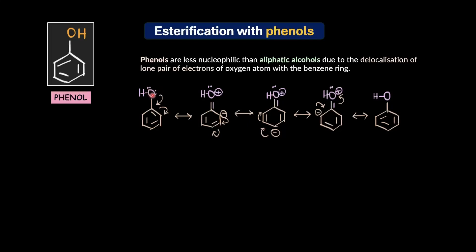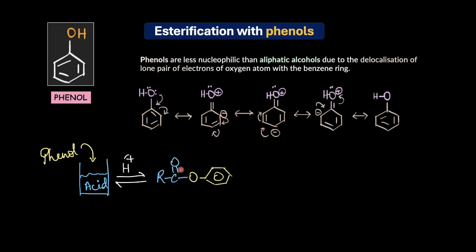The oxygen in an aliphatic alcohol is much more nucleophilic than the oxygen atom of phenols. So if you simply mix phenol with carboxylic acid under acidic conditions or Fischer reaction conditions, we do get a phenolic ester, but this reaction is very slow. It requires much harsher reaction conditions or longer reaction times to get even a decent yield, so this is not usually an efficient method.